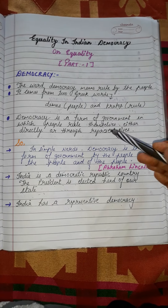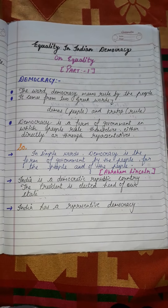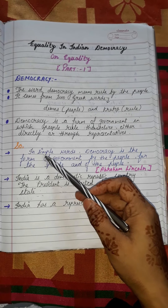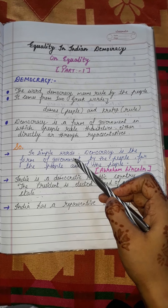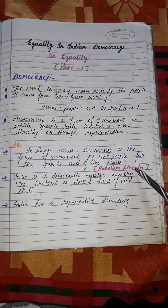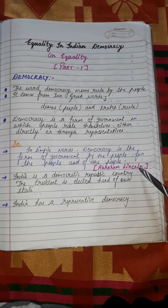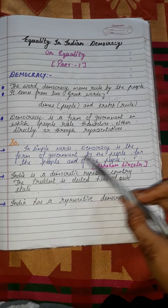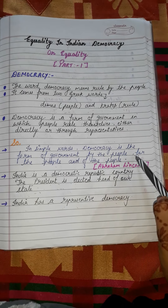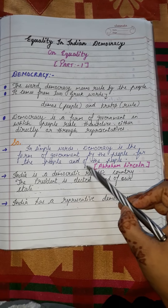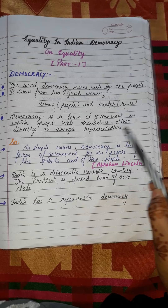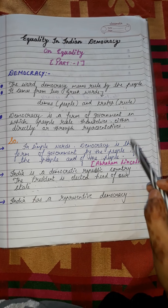They elect and rule through a representative — woh apna representative elect karte hain, us procedure se hi woh apni government form karte hain. In simple words, the definition given by Abraham Lincoln: democracy is a form of government of the people, by the people, for the people. By the people, logon ke liye, logon ke dwara, aur logon par hi.